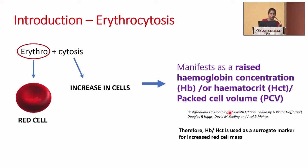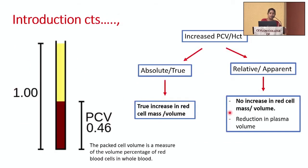In a packed cell volume or hematocrit, if you take 100% whole blood you get roughly about 46% as cells — that is the normal packed cell volume or hematocrit expected in an adult. An increased PCV or hematocrit can be either true or absolute, meaning a real increase in red cell mass, or it can be relative or apparent — where there is no increase in red cell mass, but a reduction in plasma volume makes the PCV appear elevated.